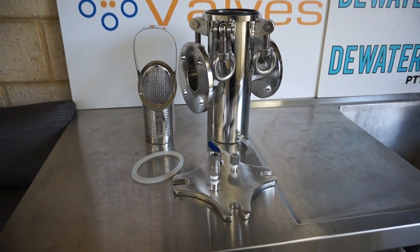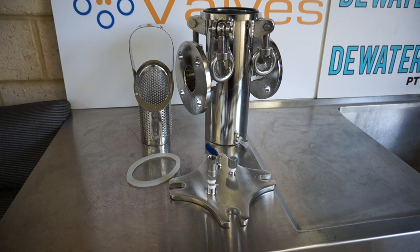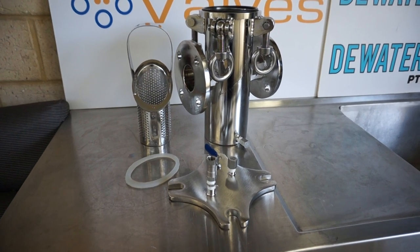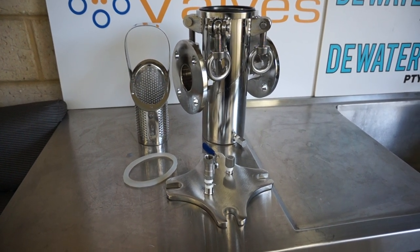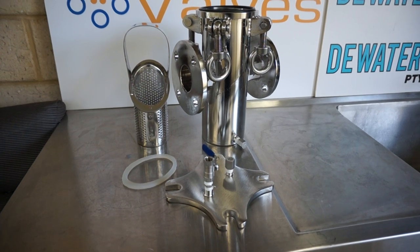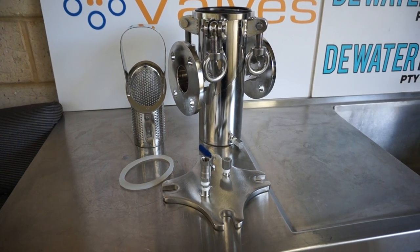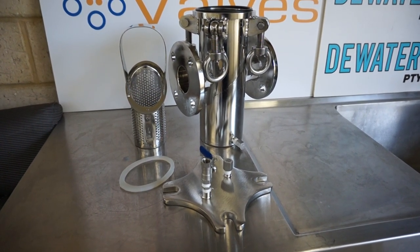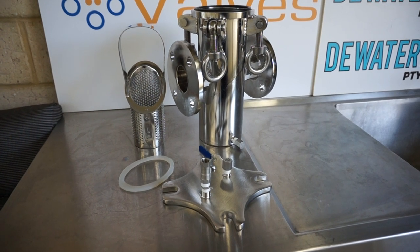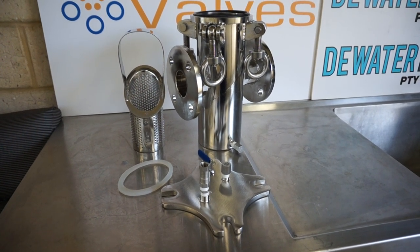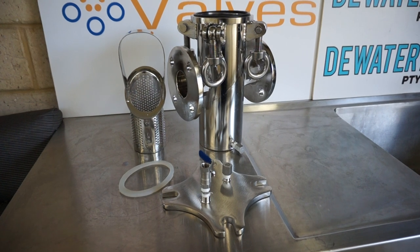Hi, so here we have a DN50 2-inch simplex basket strainer manufactured from 316 stainless steel, flanged table D, table E and AS4087PN16 in this particular size.